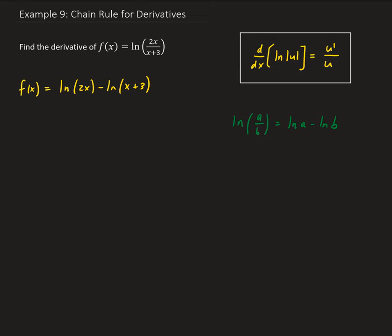Now we can find the derivative, take the derivative with respect to x. We're going to get 1 over the argument of natural log, in this case 2x, times the derivative of 2x.